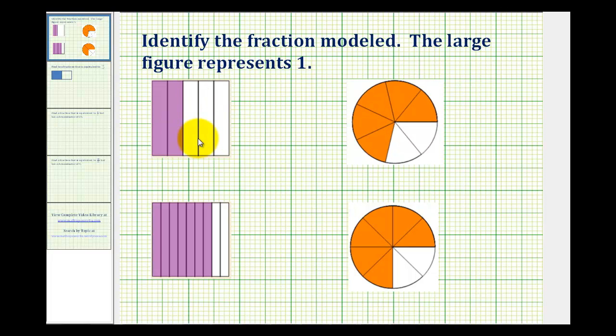notice how the square is divided up into one, two, three, four, five equal pieces. So that tells us the denominator of the fraction. And then two of the five pieces are shaded. So this model represents two-fifths.